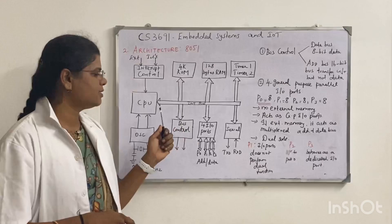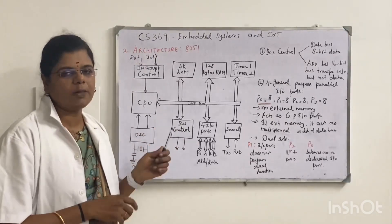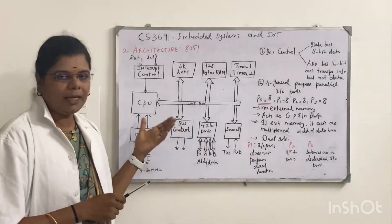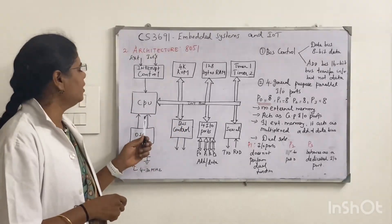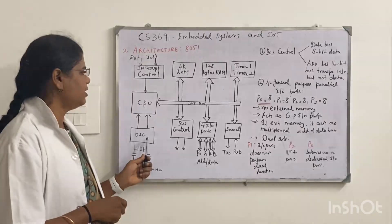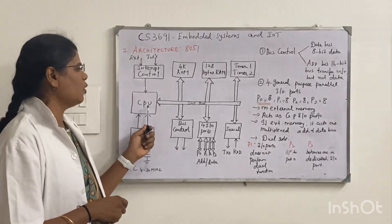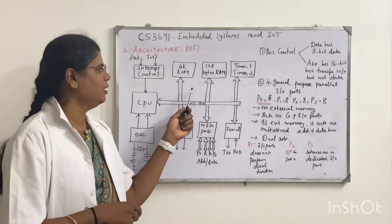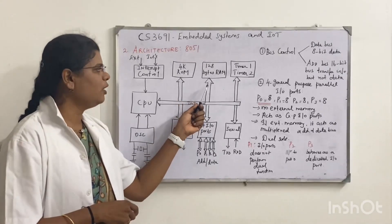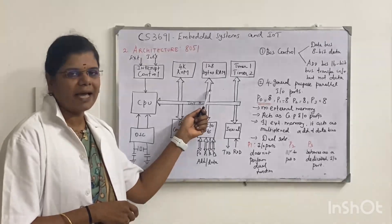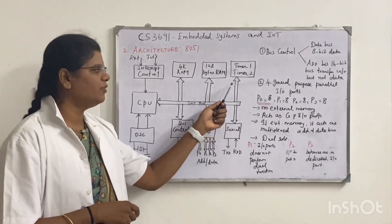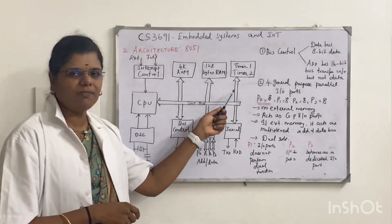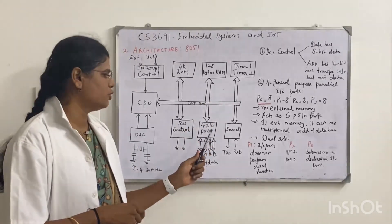In this diagram we have the CPU, which is the central processing unit, playing a very important role. We also have the oscillator. Next we have 4 kilobyte read only memory, followed by 128 bytes random access memory, and we have Timer 0, Timer 1, and Timer 2.